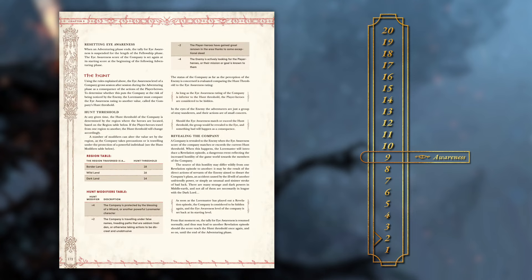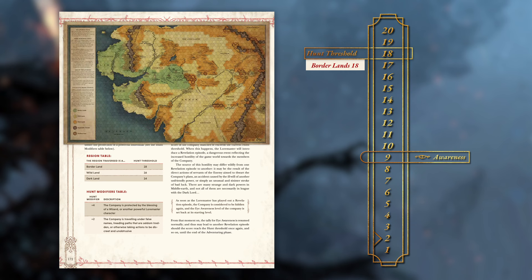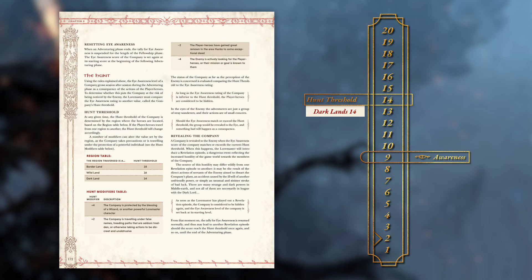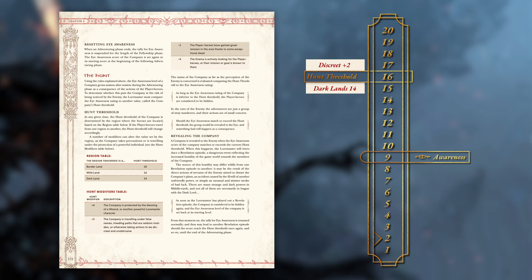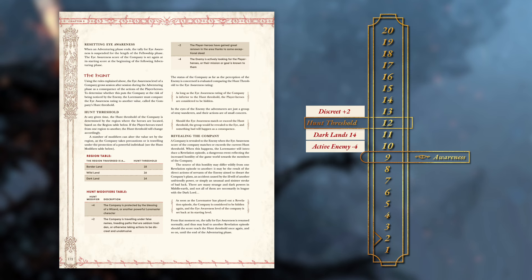Now, what are we going to do with this Eye Awareness? The players will be wanting to keep that score under the Hunt Threshold. Looking at the table on page 172, the Hunt Threshold is set depending on what type of region the heroes are travelling through — the more dangerous the region, the lower the threshold. That number can then be modified: raise the Hunt Threshold if the company is being protected by the blessing of a powerful NPC such as Gandalf or Elrond, or if the company is taking specific actions to be discreet. Alternately, lower the Hunt Threshold if the player heroes have gained renown in the area, or if the enemy is actively looking for them.